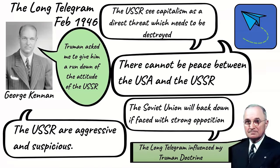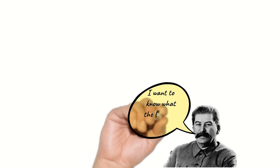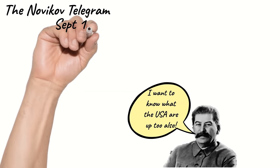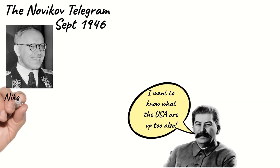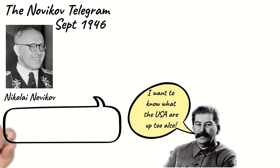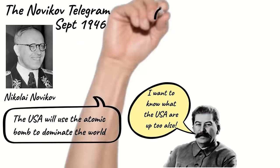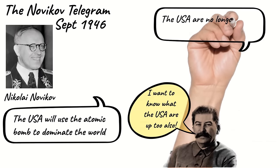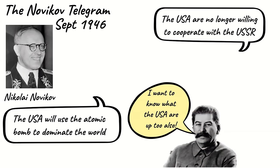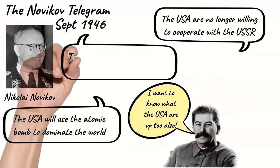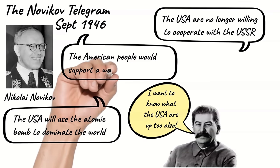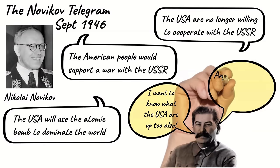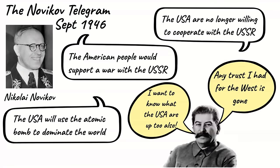The Soviets responded in a similar way, partly in retaliation and mostly because Stalin wished to know the same information about the USA. The Novikov telegram, sent in September 1946 by Nikolai Novikov, who was the Soviet ambassador in Washington, told Stalin that the USA wanted to use military power to dominate the world. He said that the USA were no longer willing to cooperate with the USSR, and he did believe that if the USA were to start a war with the USSR the American people would support it. The Novikov telegram convinced Stalin that he was right not to trust the West.